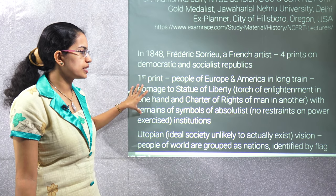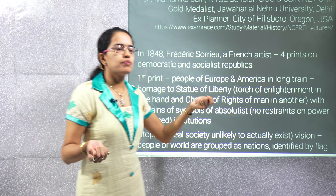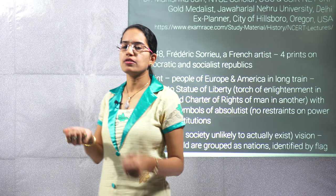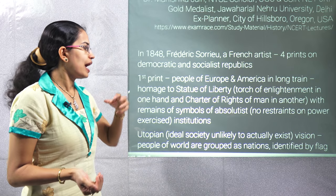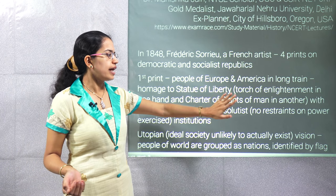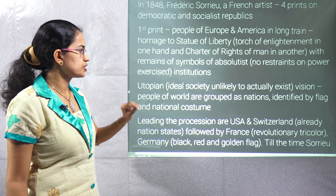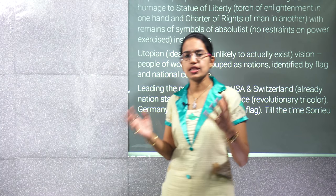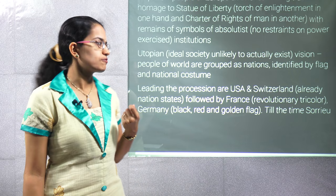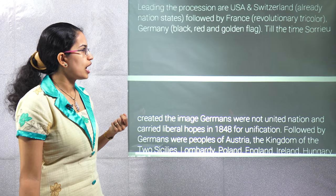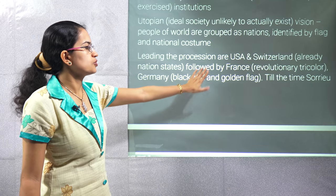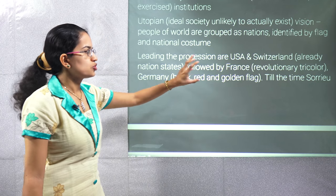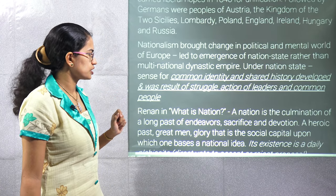One of the four prints talked about the Statue of Liberty. The Statue of Liberty represents a torch of enlightenment in one hand and the charter of rights of man in the other. It talks about removing absolutism and the symbols of absolutism during that time. We were looking for a kind of utopian world — an ideal society that could be built. Those were the feelings prominent among the people. In France you had the revolutionary tricolour; in Germany, the black, red and golden flag. Switzerland and the US were already forming nation states during that time.